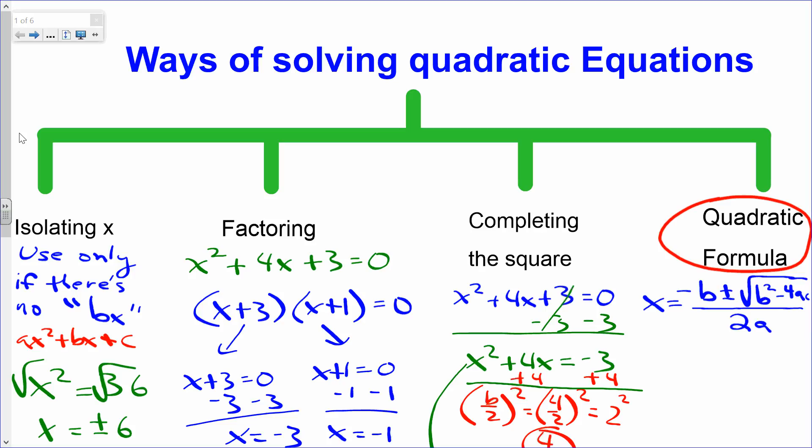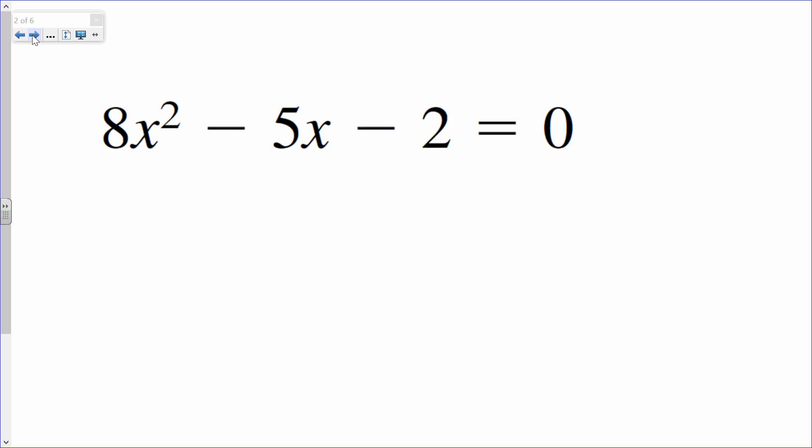We already know completing the square, factoring, and isolating x, so go ahead and let's take some notes here. I'm going to write this example down: 8x squared minus 5x minus 2 equals 0.